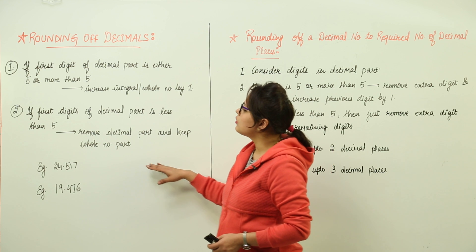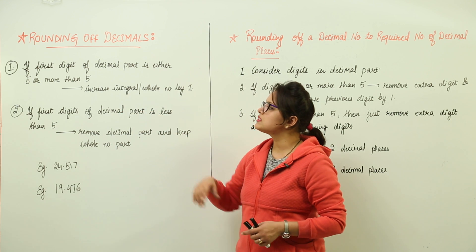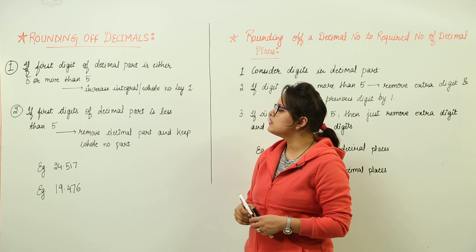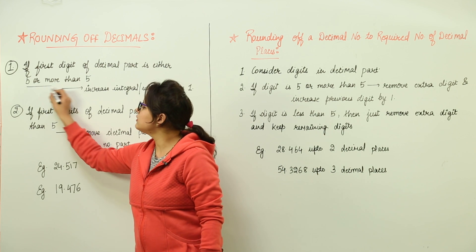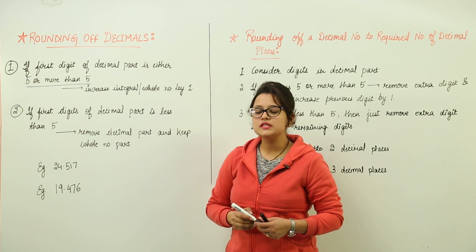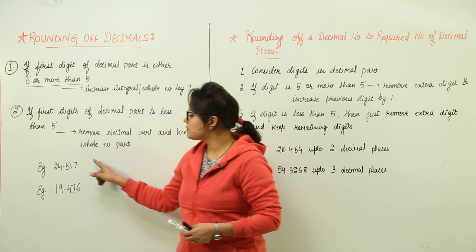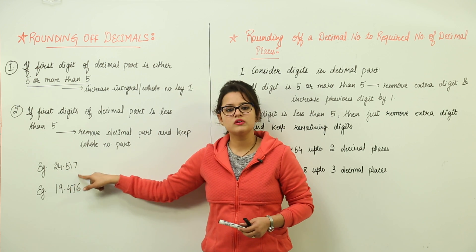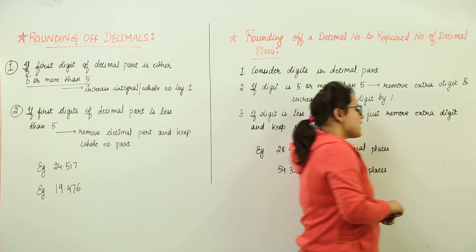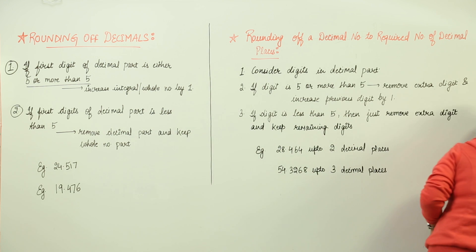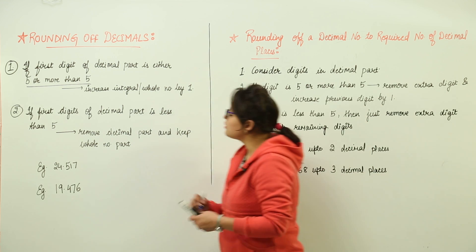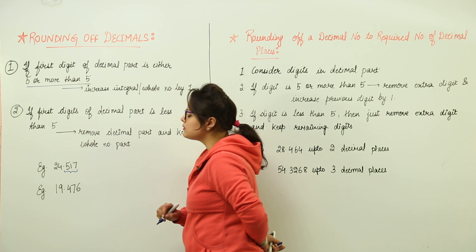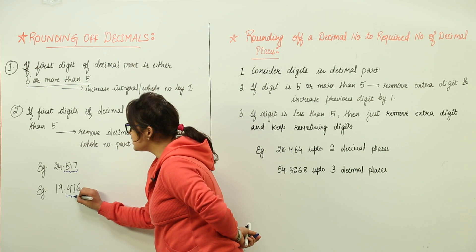How to round off decimals? The first step: check the first digit of the decimal part — is it 5 or more than 5? You have an integral part and a decimal part in any decimal number. We are only going to consider the decimal part for both the cases.